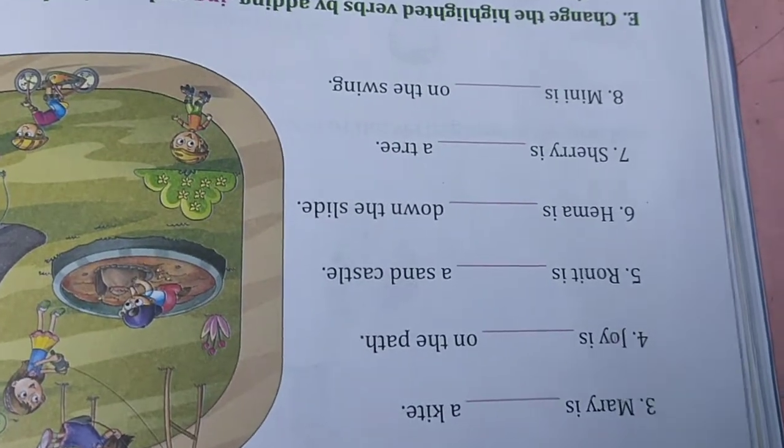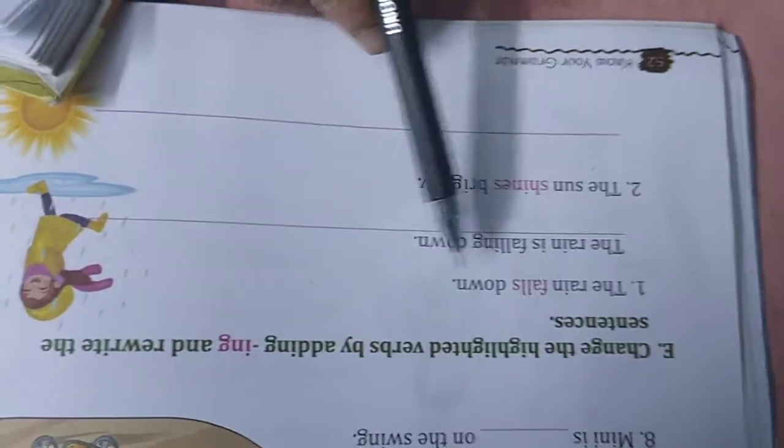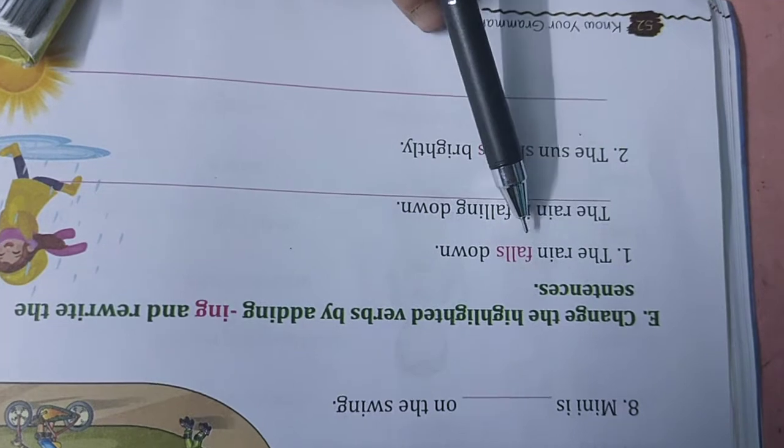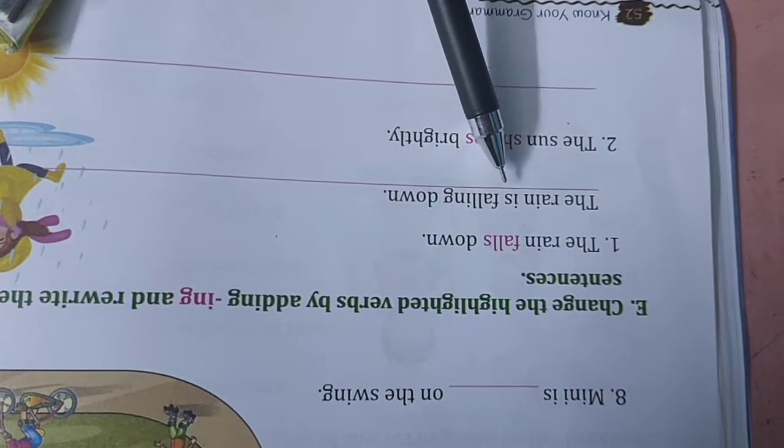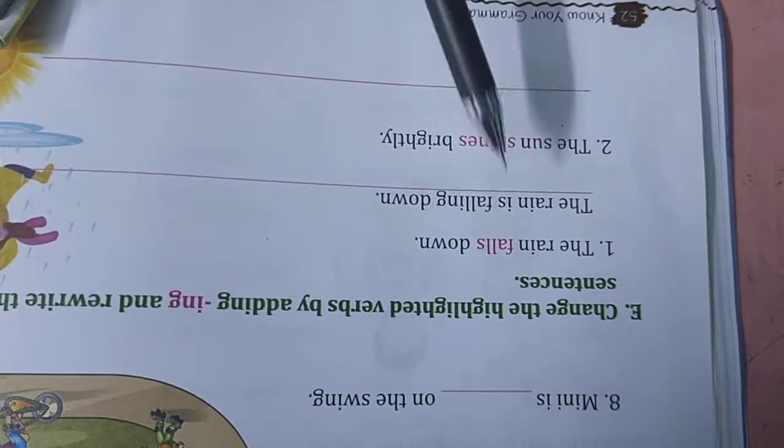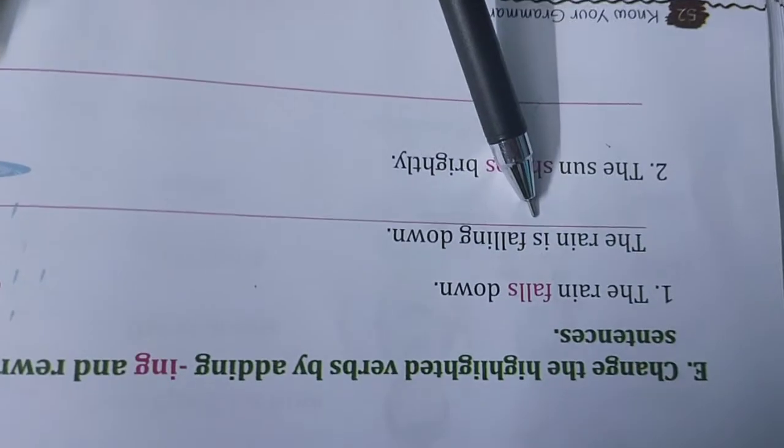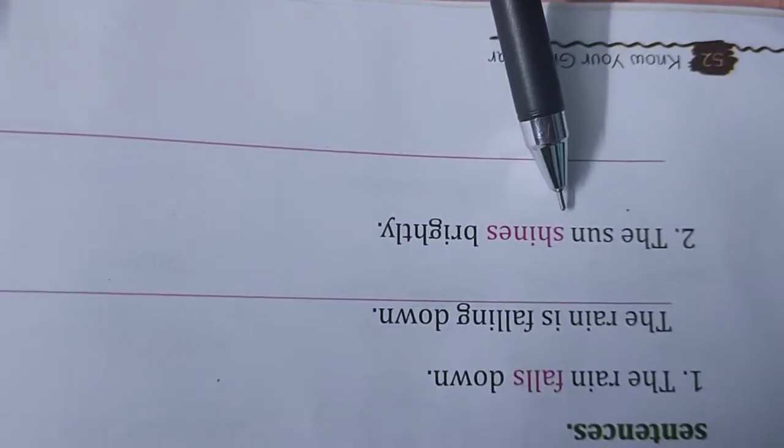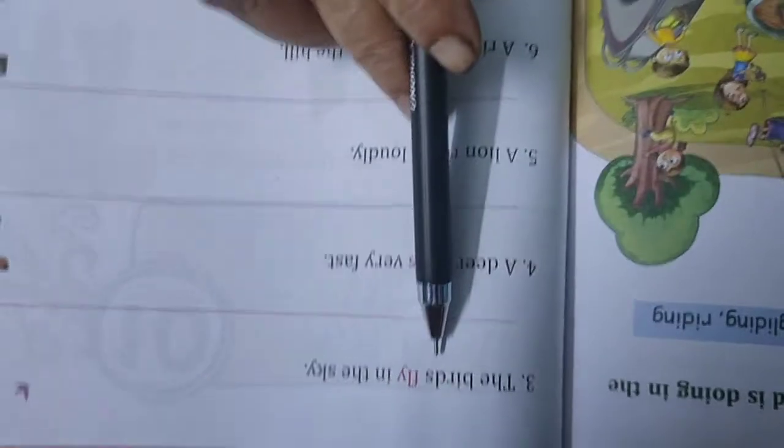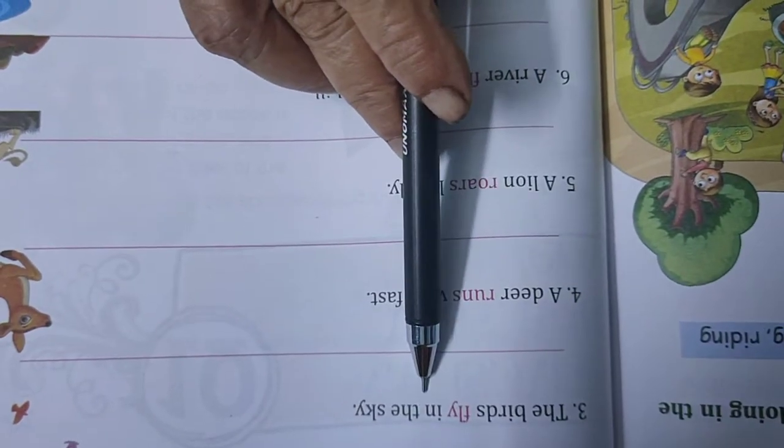Number E. Change the highlighted verbs by adding ing and rewrite the sentences. The rain falls down. The rain is helping verbs here. The sun is shining brightly. The birds are flying in the sky.